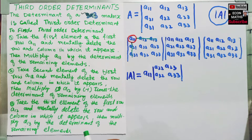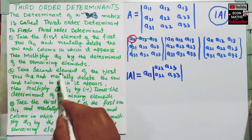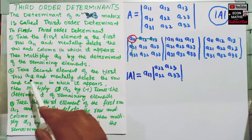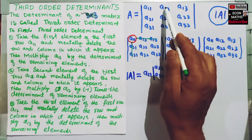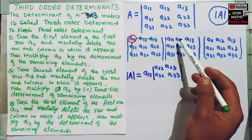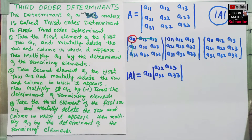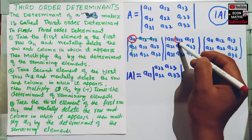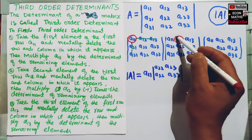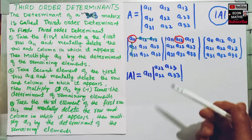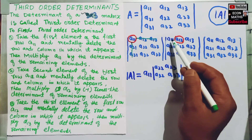Similarly, we take the second element of the first row. We take the second element of the first row and delete the row and the column in which it appears.